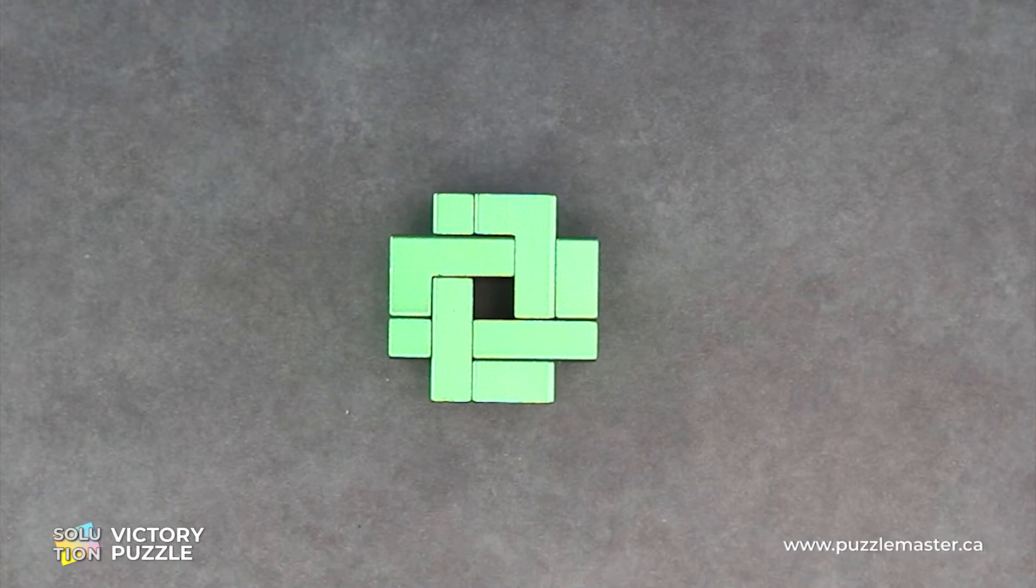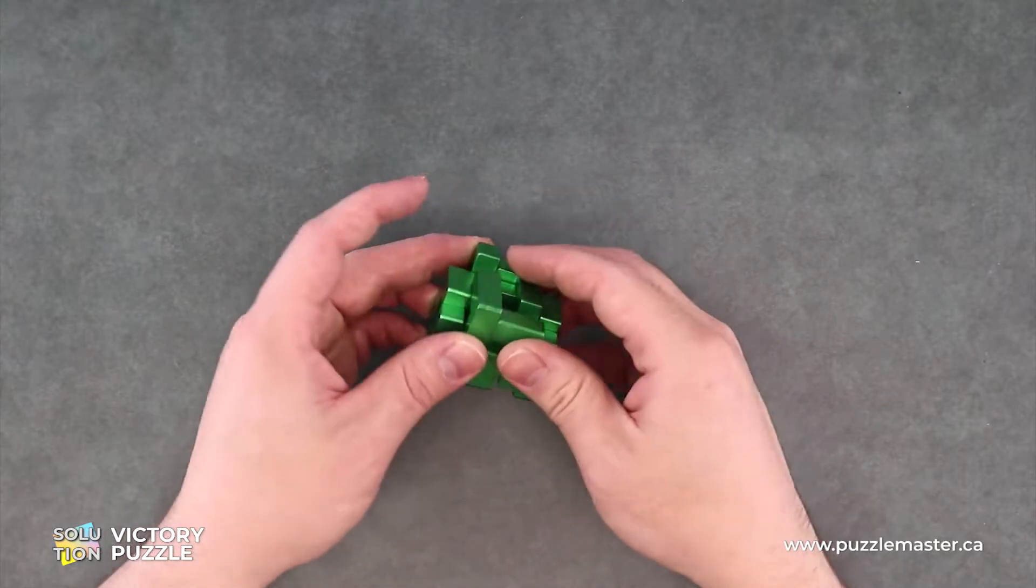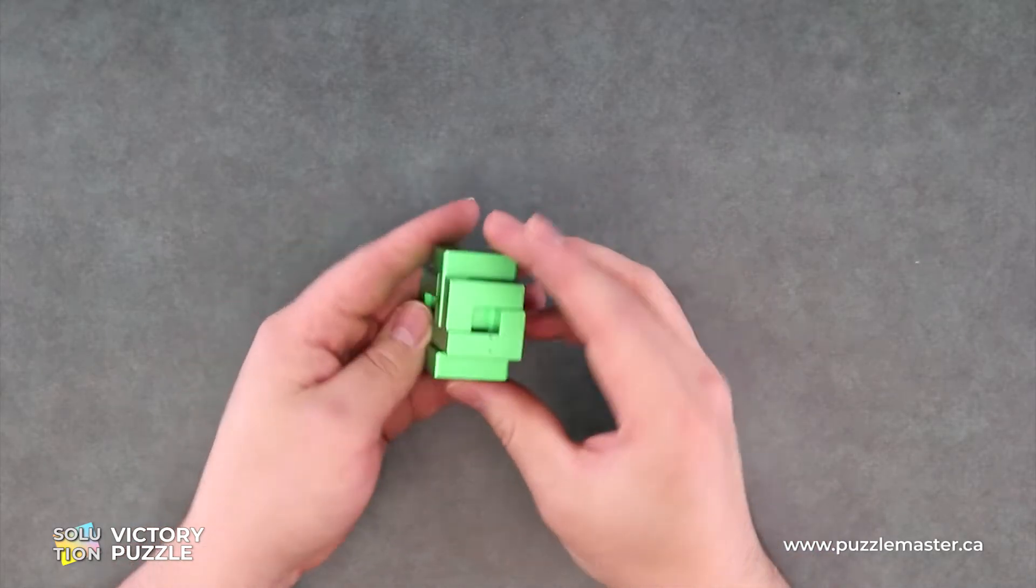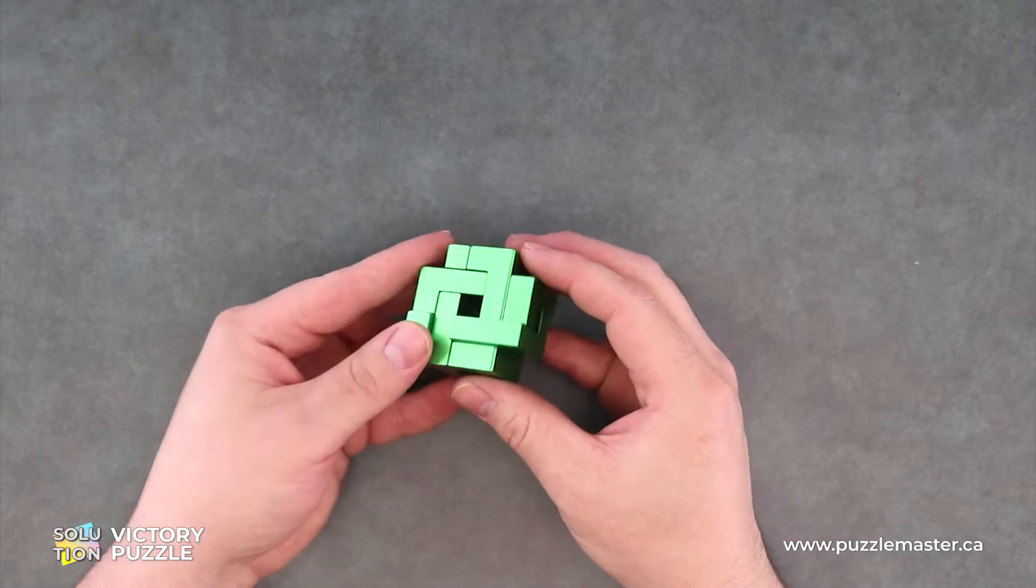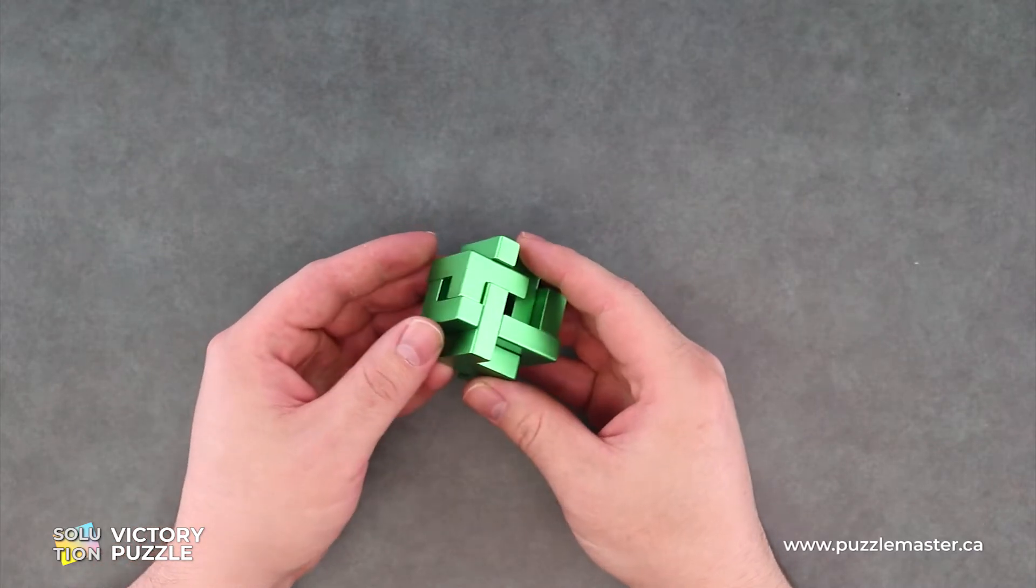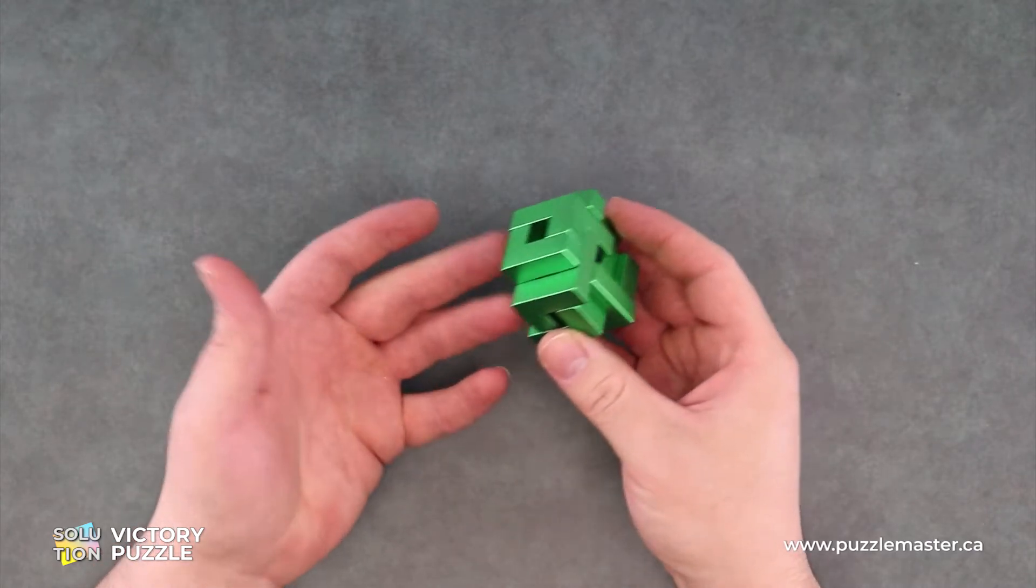The goal of this puzzle is to disassemble the Victory. To start with, we can see that we have four pieces and they are actually all identical.